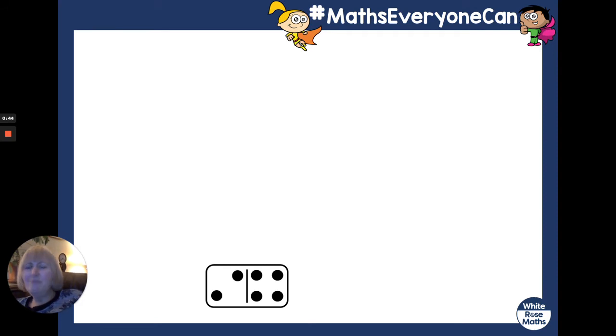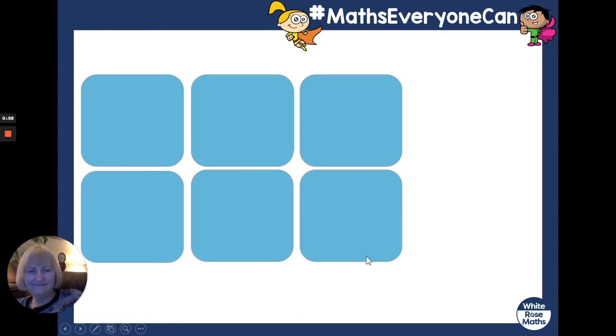Hmm. You might have to count these. There's two on one side, isn't there? And there's four on the other. Let's count them. One, two, three, four, five, six. Did you get that? OK.